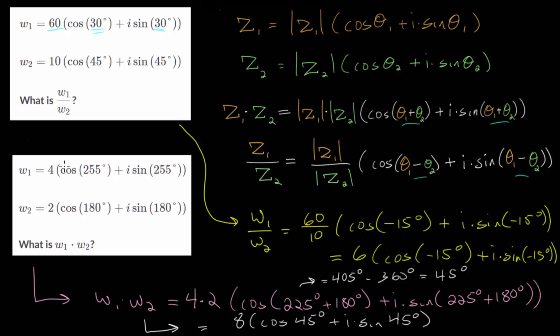So this product, when multiplying these two complex numbers, will give us a new complex number. We can call it W3 if we want, where the magnitude of this complex number is 8 and its angle, its argument, relative to the positive real axis is 45 degrees.